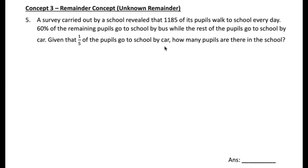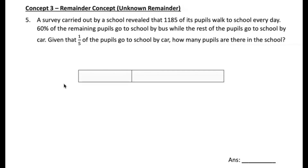Given that one-fifth of the pupils go to school by car, how many pupils are there in the school? Let's draw a model to represent all the pupils. 1,185 will be here — this portion goes to school by walking. The rest will be the remainder.